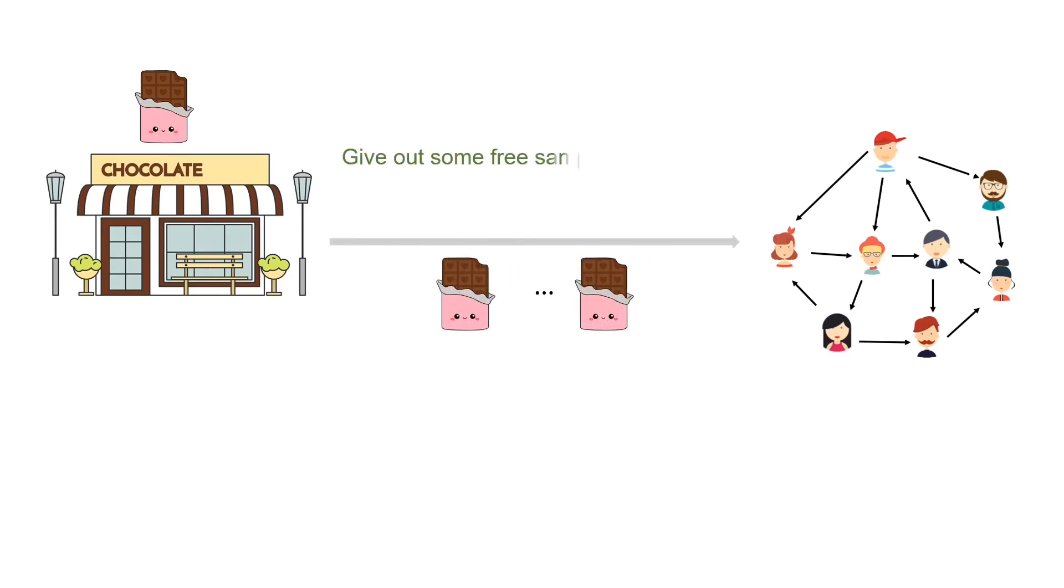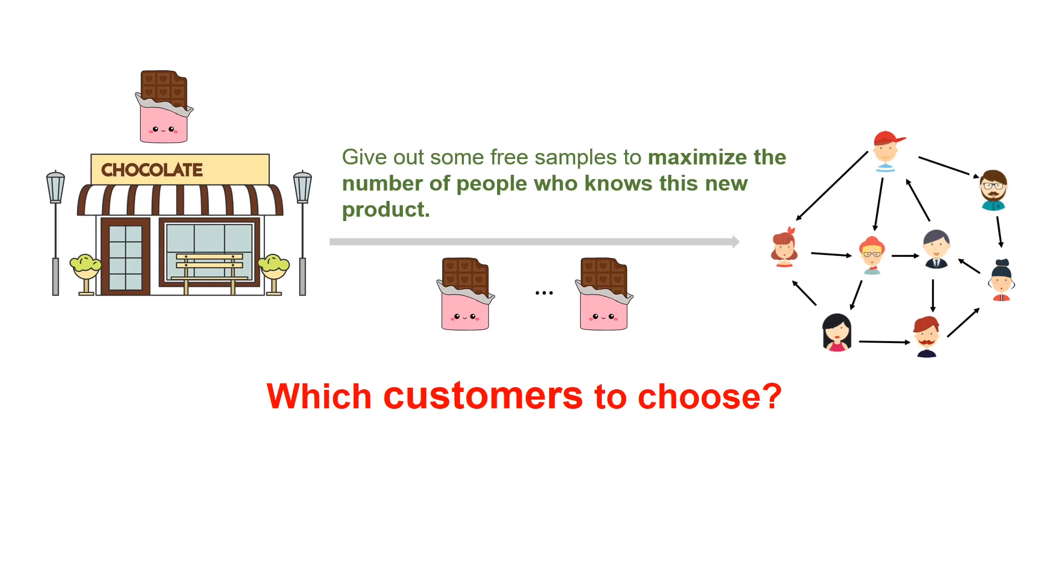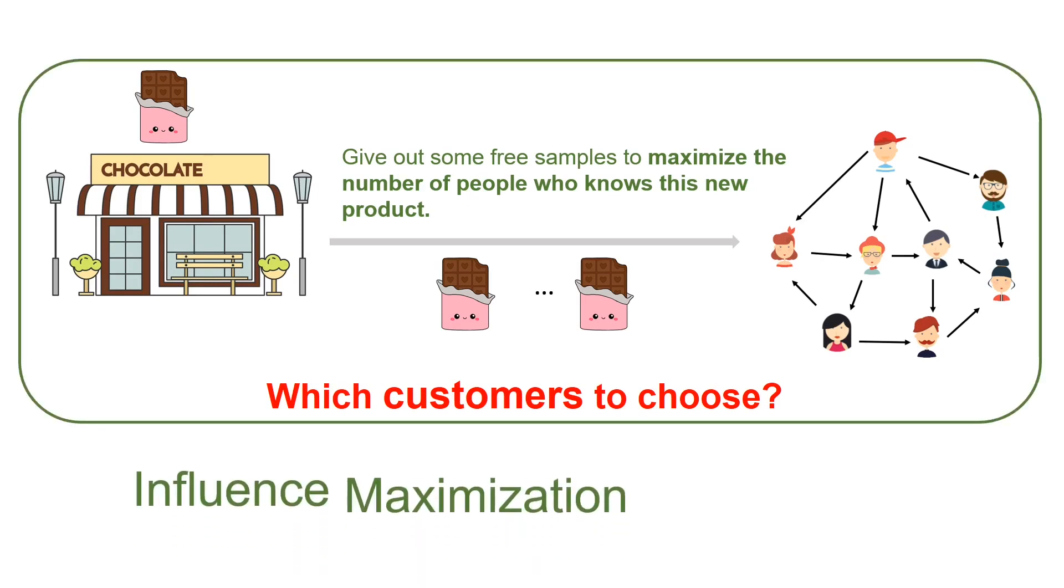Let's say a chocolate shop wants to promote a new chocolate product. It decides to give out some free samples to maximize the number of people who know this new product. Given the limited number of free samples, which customers should this chocolate shop choose? This problem can be abstracted as an influence maximization problem.